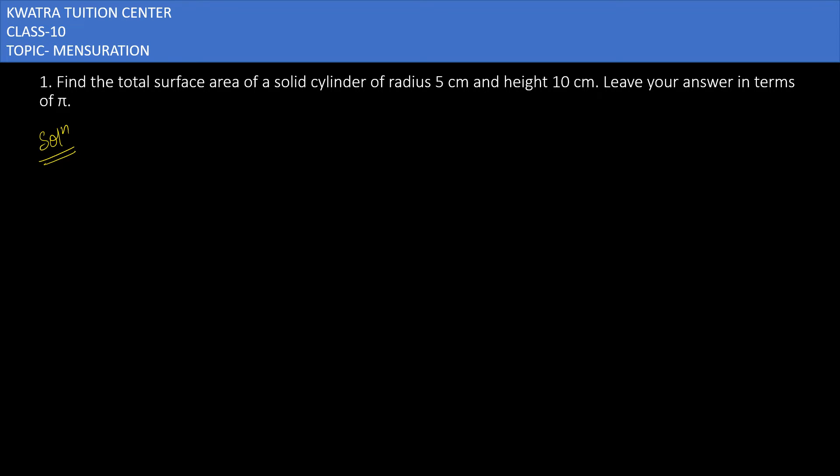Let's start with question number one. It says find the total surface area of a solid cylinder of radius 5 cm and height 10 cm. Leave your answer in terms of π. So you can see r is 5.